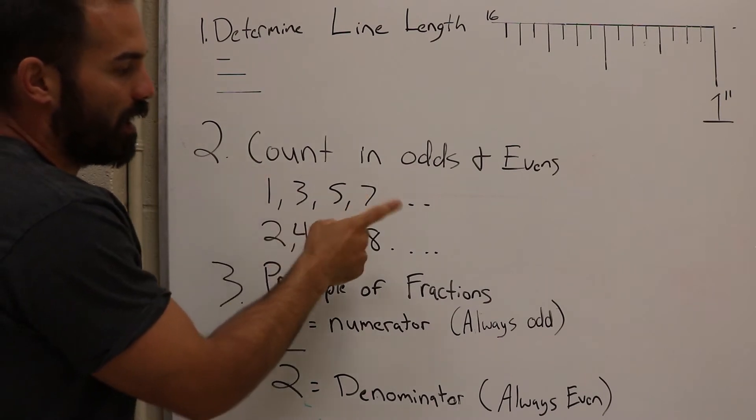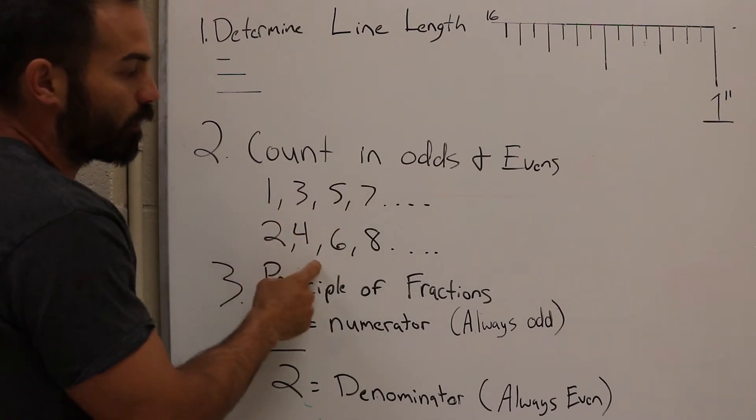Number two, you've got to be able to count in odds and evens: one, three, five, seven, two, four, six.